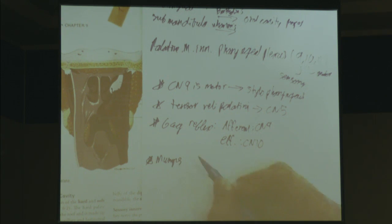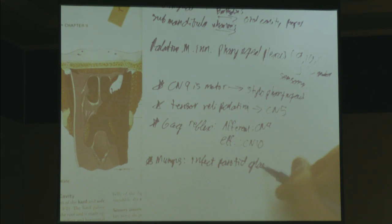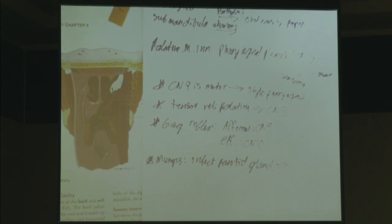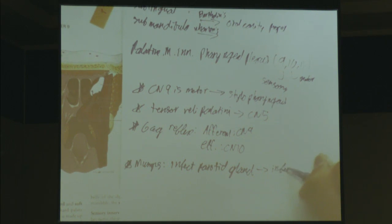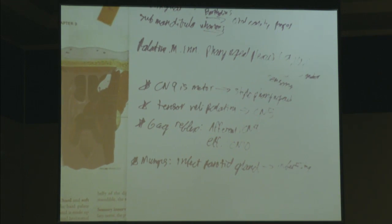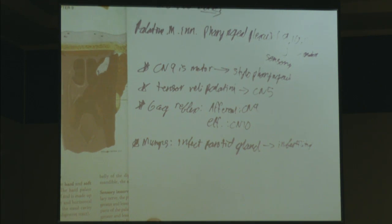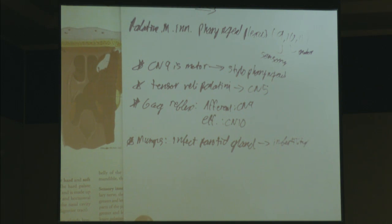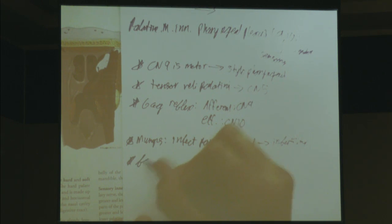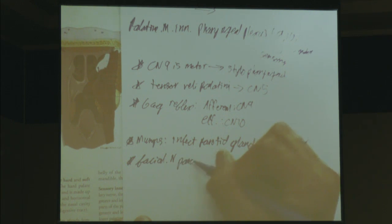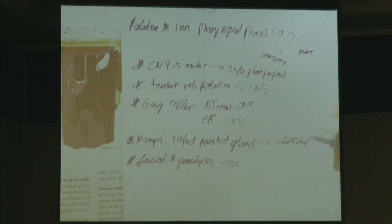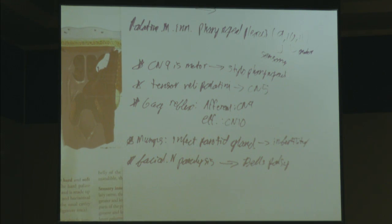Mumps typically infects the parotid gland, and if it progresses and becomes very severe, it can actually lead to infertility. One fact you should keep separate: facial nerve paralysis — paralysis of cranial nerve 7 — if it proceeds untreated, can cause Bell's palsy. Bell's palsy presents as drooping at one half of the face. It's kind of similar to Horner's syndrome, but Horner's syndrome is a pathology of the sympathetic plexus.